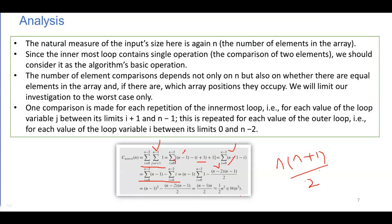Combining the results, we get (n-1)² minus (n-2)(n-1)/2, which simplifies to (n-1)(n)/2, which equals (1/2)n² minus (1/2)n. Removing the constants, we get the dominant term n², so the worst case time complexity of this algorithm is Θ(n²).